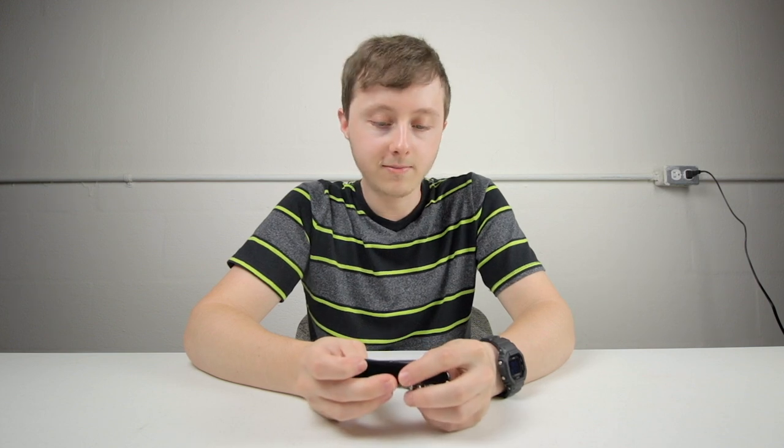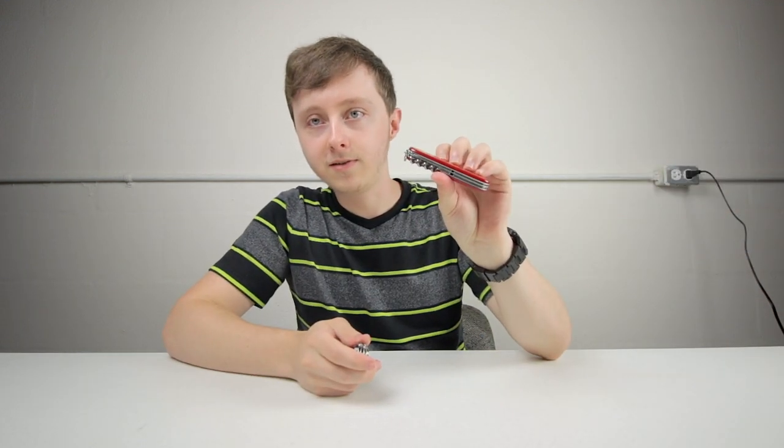So compact doesn't have a second blade. It has the scissors. So you kind of have to make the decision. Do you want the scissors? Or the file? Or do you not care? And you can get yourself a Spartan. Which is thinner.